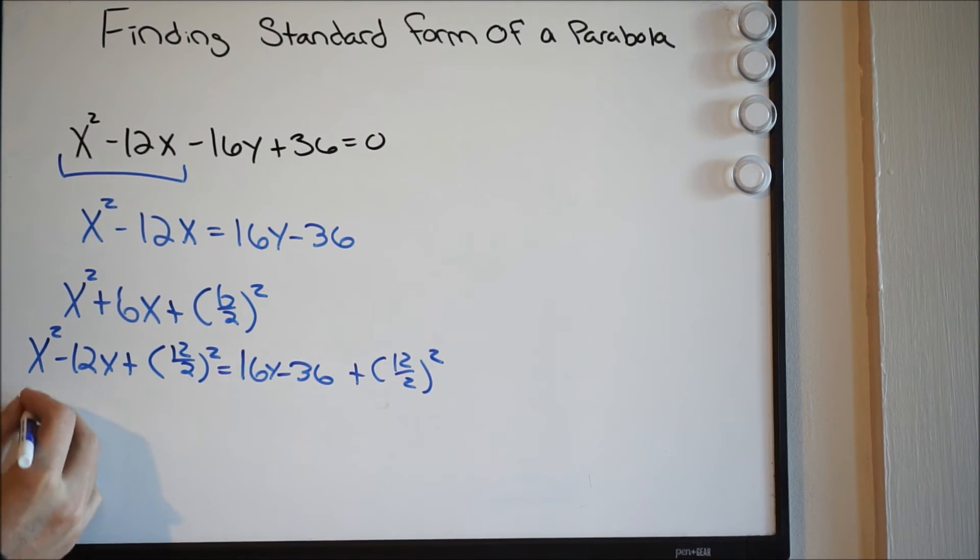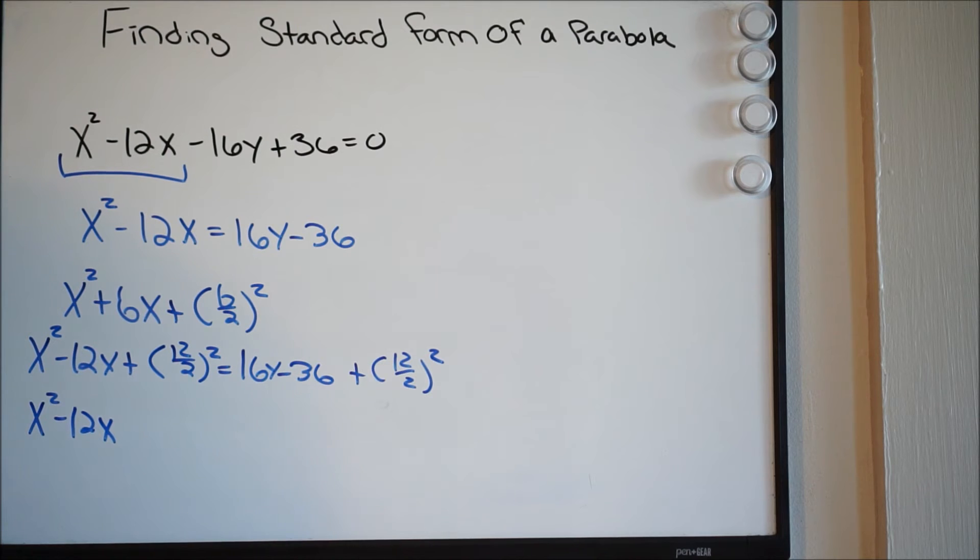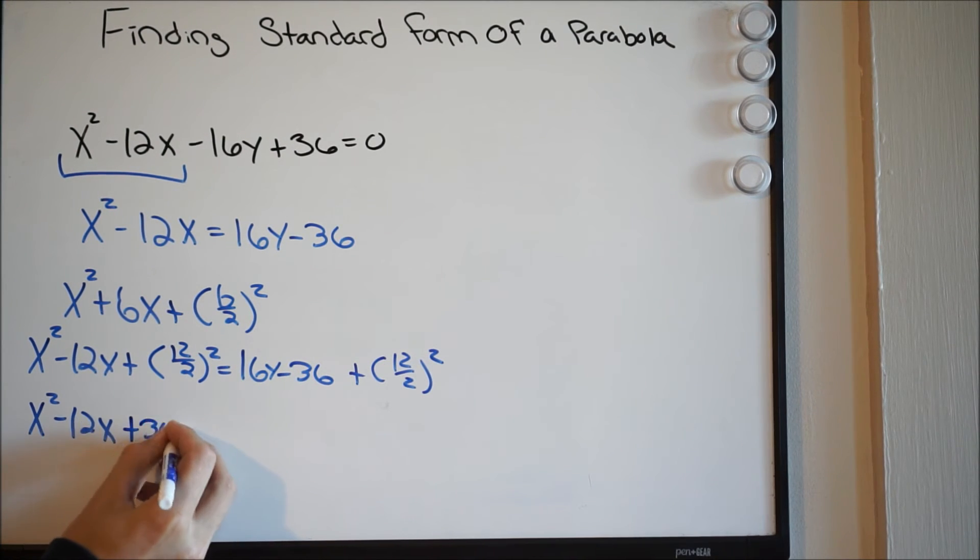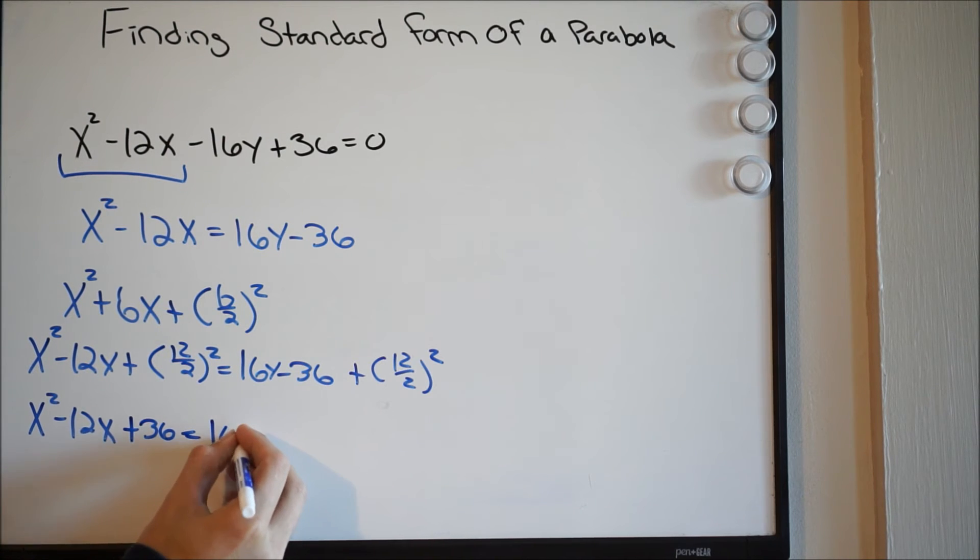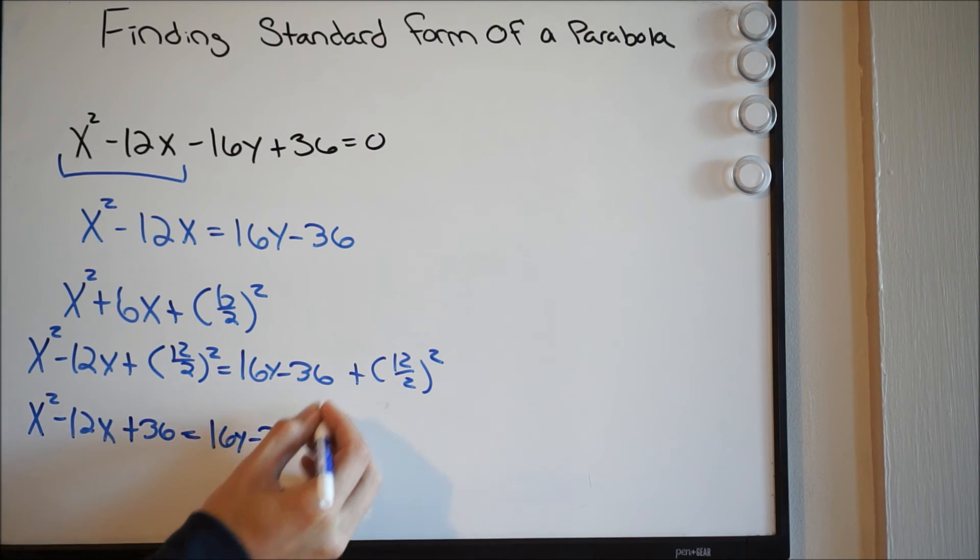So let's go a little bit further. We're going to get x squared minus 12x. Let's go ahead and do this. 12 divided by 2 is going to be 6. 6 squared is 36, equal to 16y minus 36. Again, this will be plus 36.